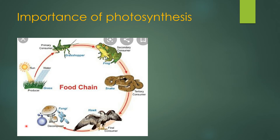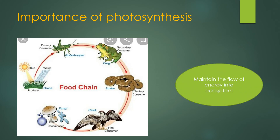The last one in the food chain is the decomposer. When the green plants, grasshopper, frogs, snakes, and hawk die, these dead particles are returned to nature with the help of decomposers. They digest the dead and decaying matter and release the energy back into the ecosystem, completing the cycle. So basically, photosynthesis is important for the flow of energy into the ecosystem.